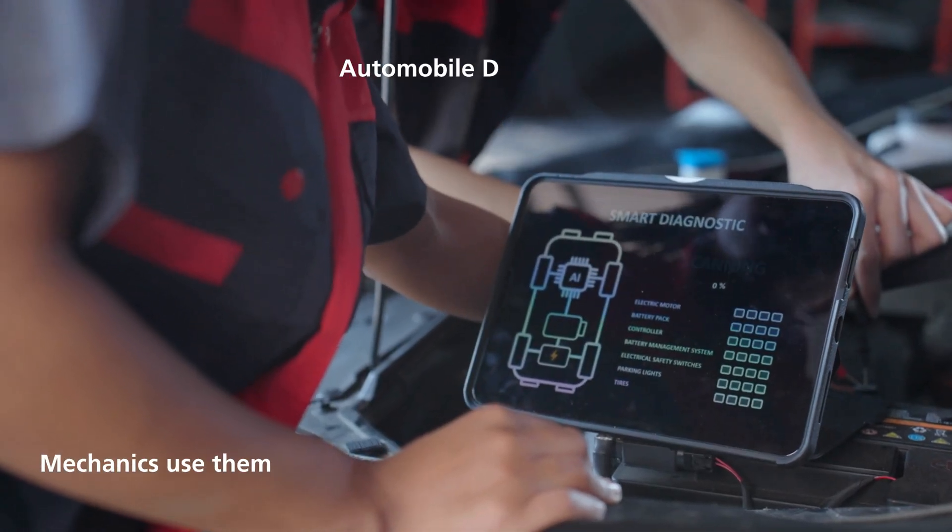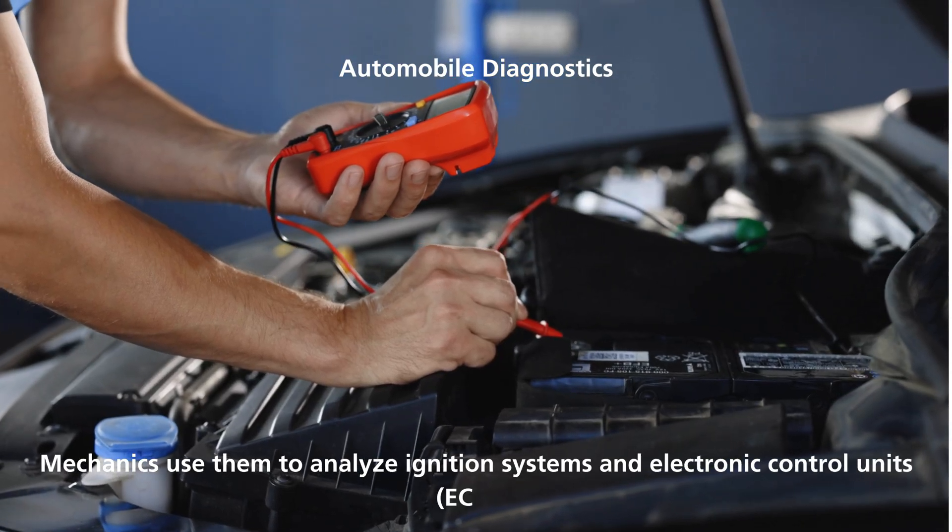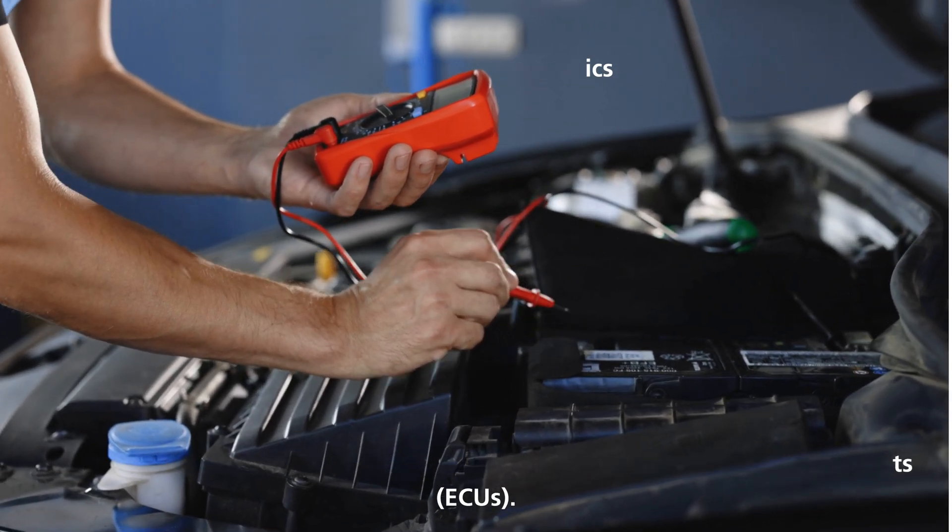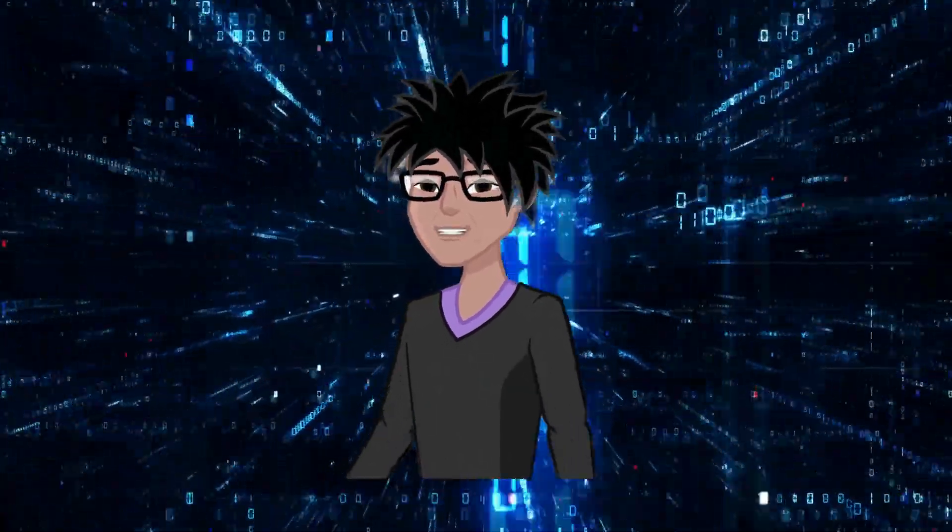Automobile diagnostics. Mechanics use them to analyze ignition systems and electronic control units, ECUs. Wherever there's an electronic signal, the CRO helps you see it in action.